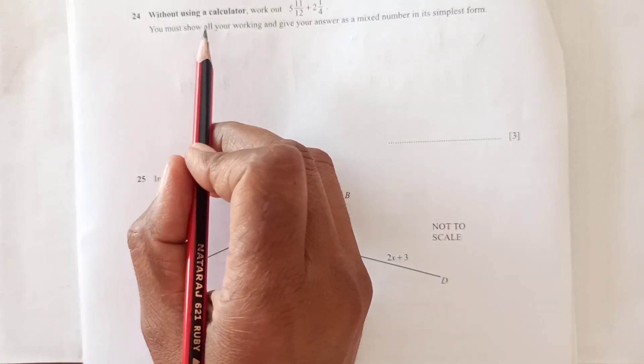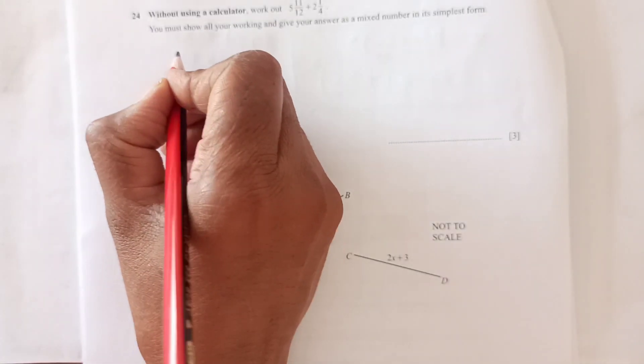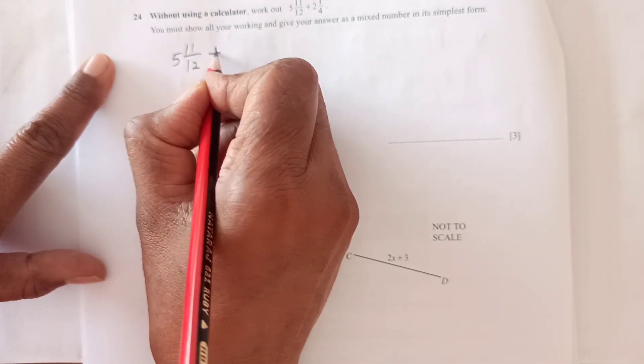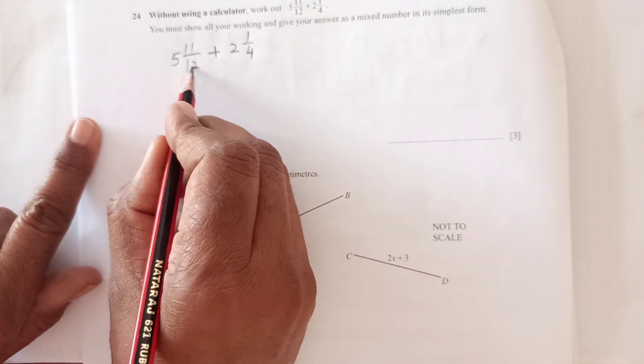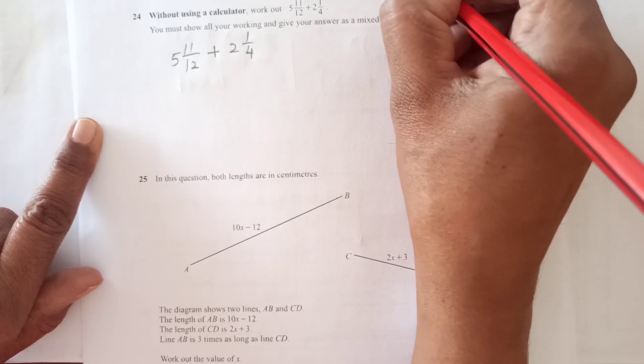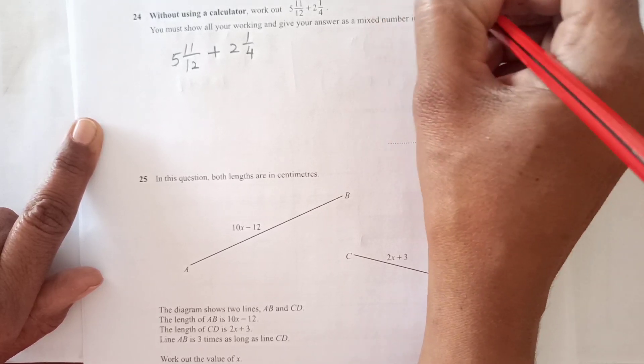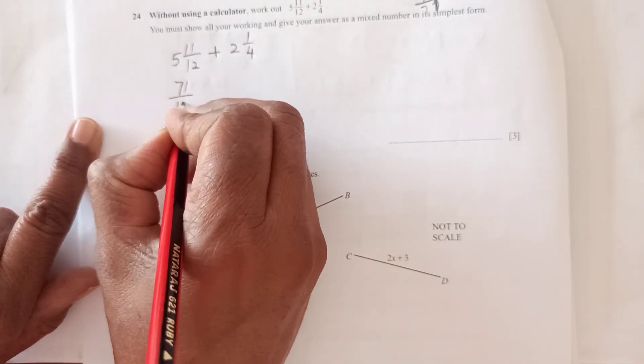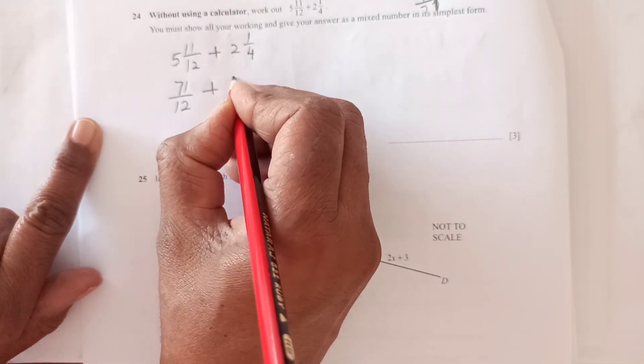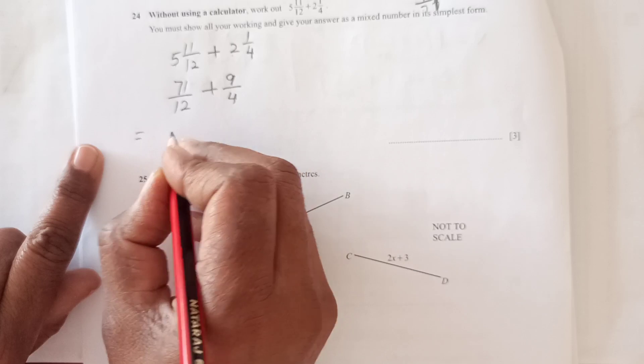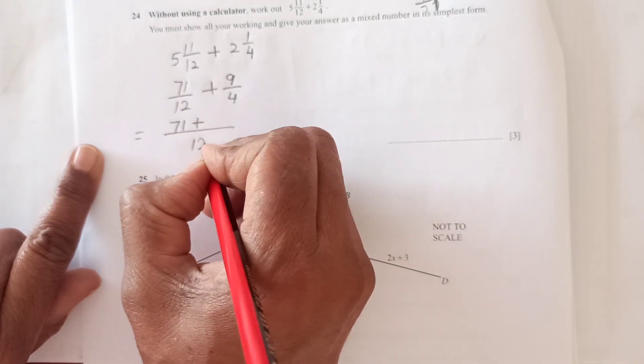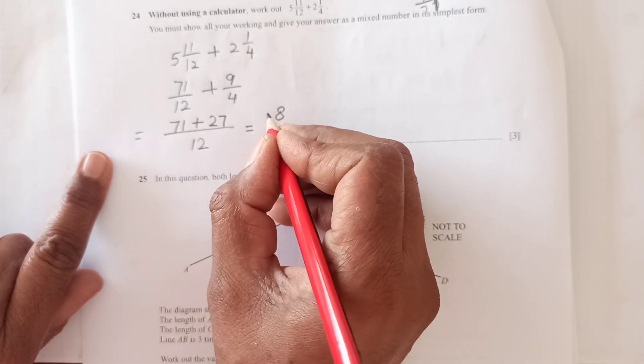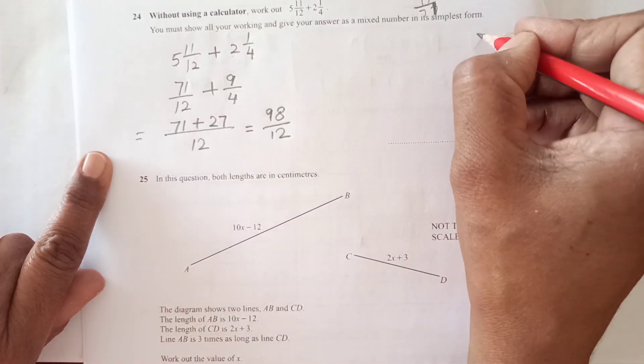Question 24: Without a calculator, work out 5 and 11/12 plus 2 and 1/4. Converting to improper fractions: 12 times 5 plus 11 is 71 over 12, and 4 times 2 plus 1 is 9 over 4. The LCM is 12, so we have 71 plus 27, which is 98.